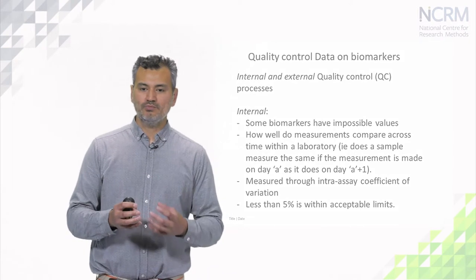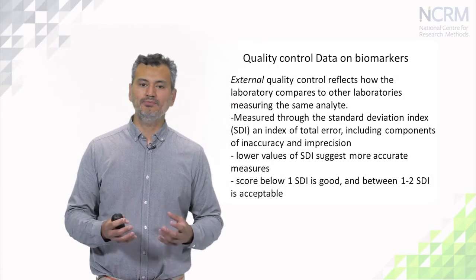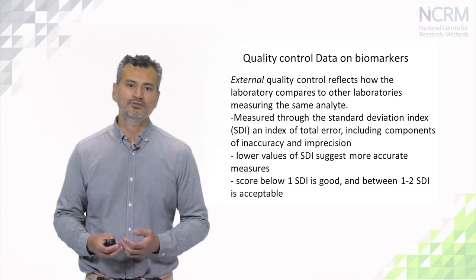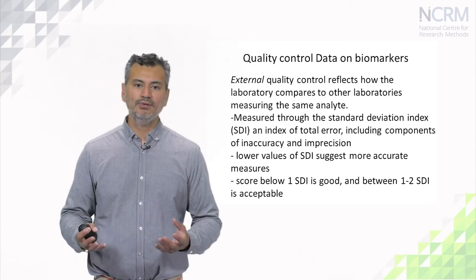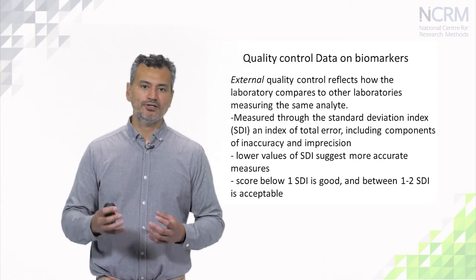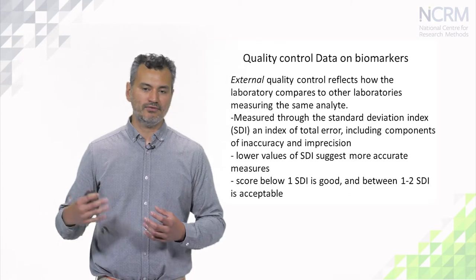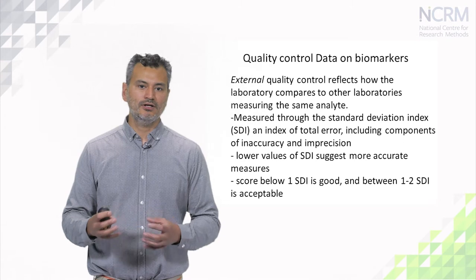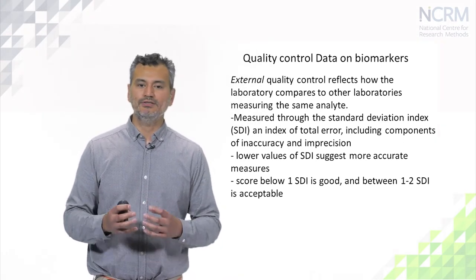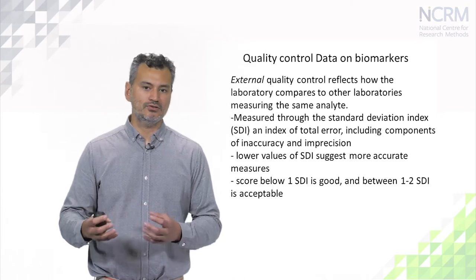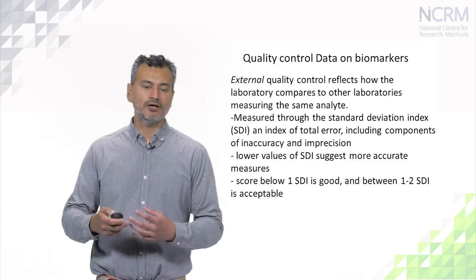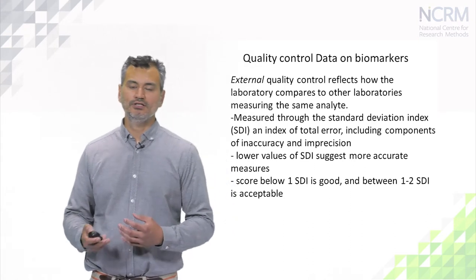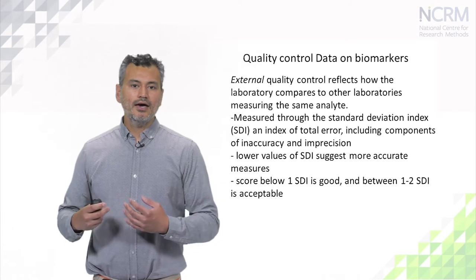That's comparing how one particular biomarker within a lab compares to the same biomarker when processed on another day. The external quality control measures compare how the lab does in relation to other labs in processing the same analyte, and that's measured through the standard deviation index. It's a measure of total error in analyzing a particular biomarker in comparison with all the labs that have analyzed that analyte. We're trying to get low values — a score below one standard deviation index is generally very good.